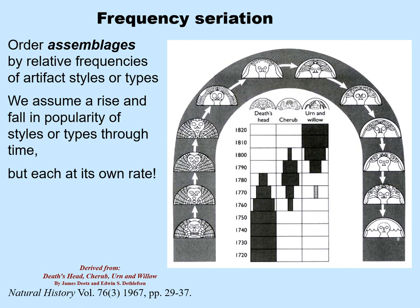The second kind of seriation is called frequency seriation. In this type of seriation, instead of ordering one kind of artifact, you order an entire assemblage — the entire collection of lithic tools or bifaces, or in this illustration, tombstone decorations from an entire site. We assume a rise and fall in popularity of styles or types through time, and recognize that each style is rising and falling at its own rate.